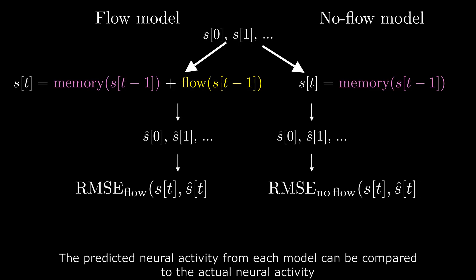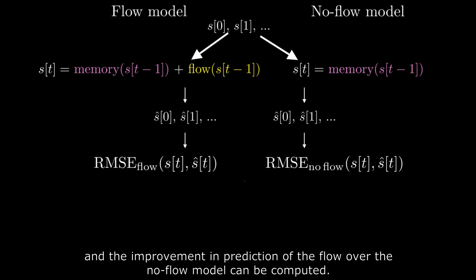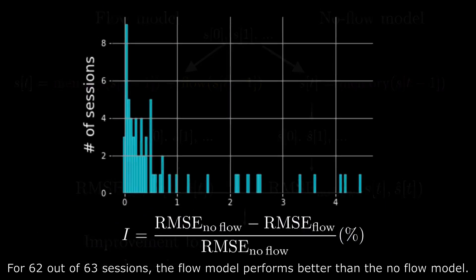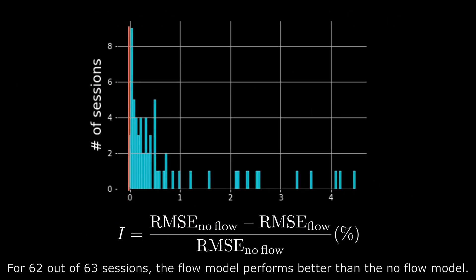The predicted neural activity for each model can be compared to the actual neural activity, and the improvement in prediction of the flow over the no-flow model can be computed. For 62 out of 63 sessions, the flow model performs better than the no-flow model.